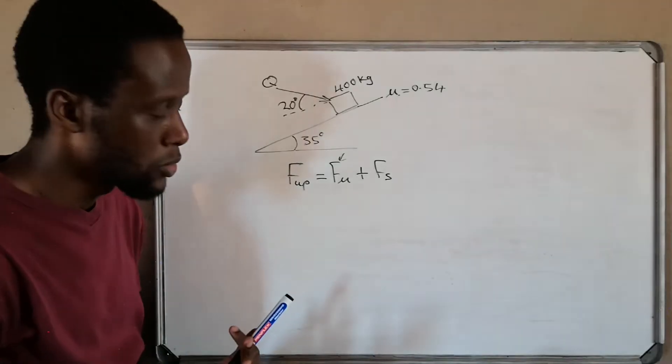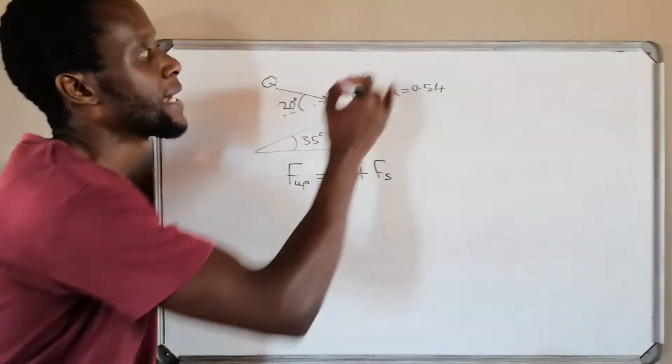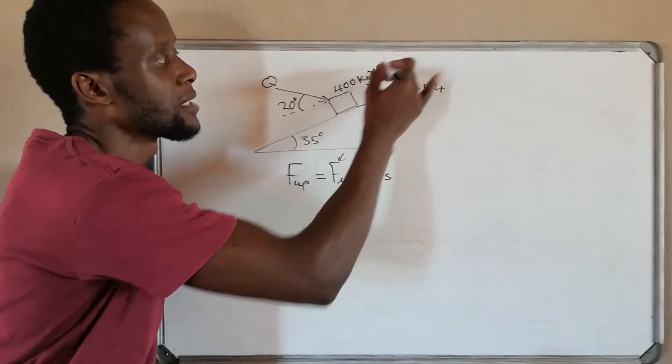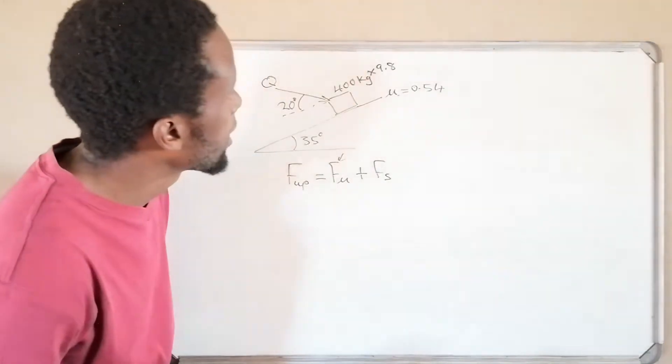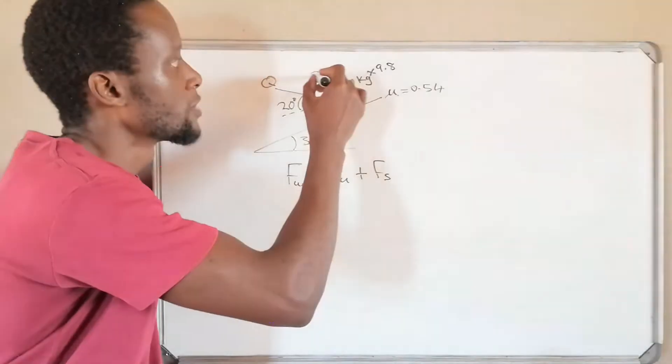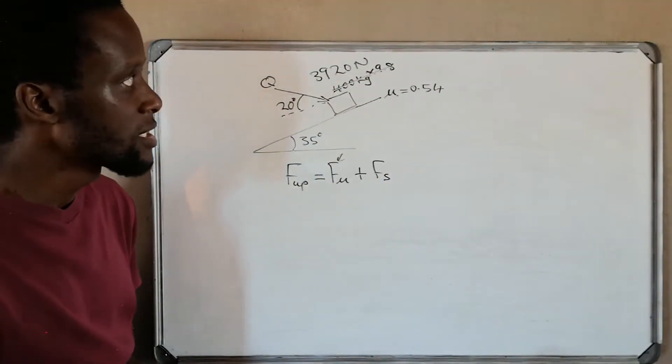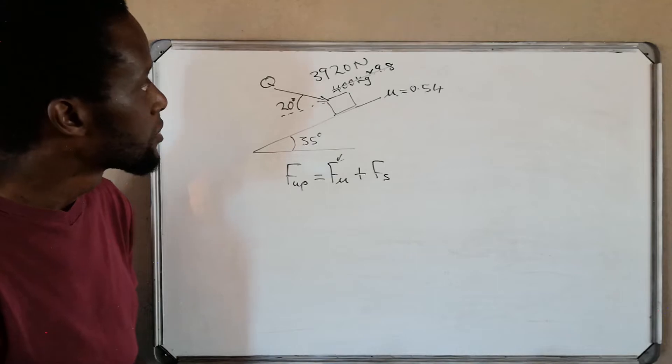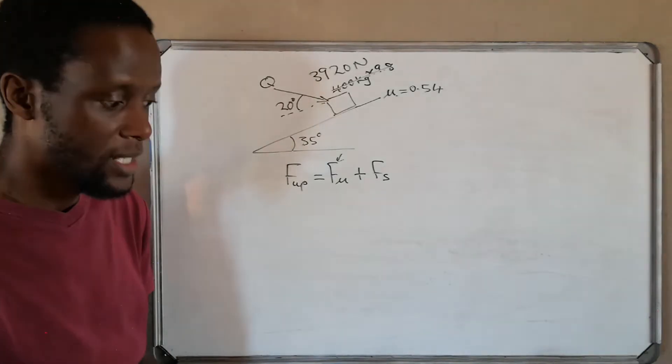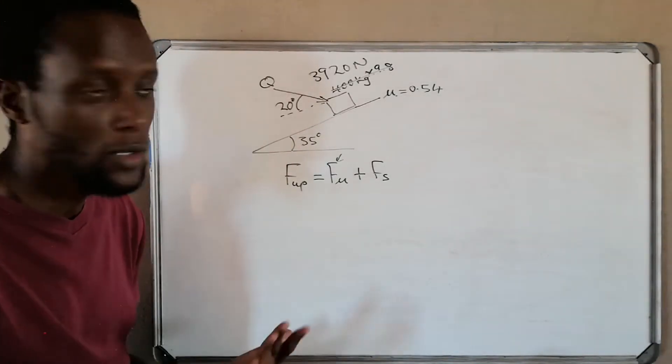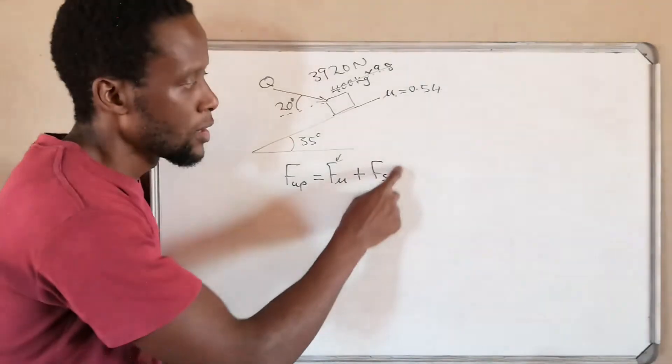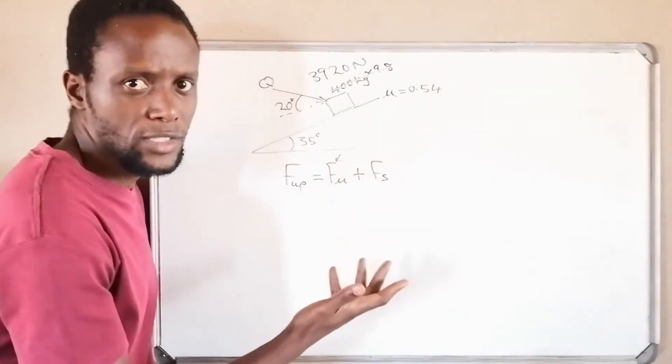And then remember what I said, these are friction forces, so do not deal with the 400 kg. Quickly convert that to a weight. You multiply this by 9.8. 400 times 9.8 gives you 3920 newtons. So we won't be dealing with the 400 kg but we'll be dealing with the 3920 newtons that is the weight of the object.